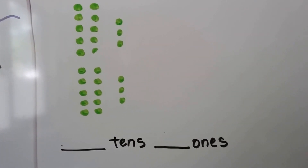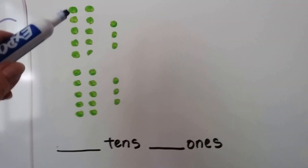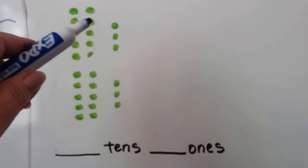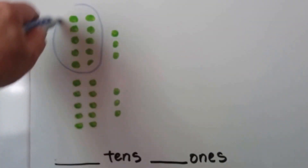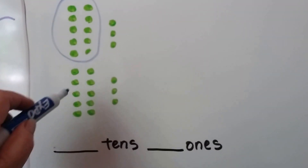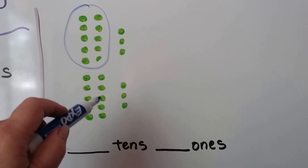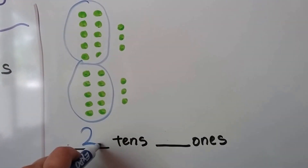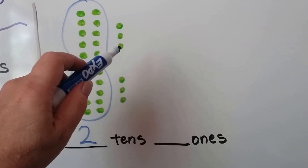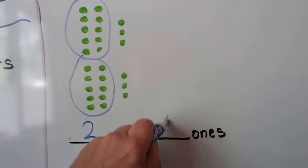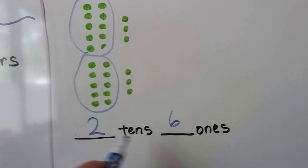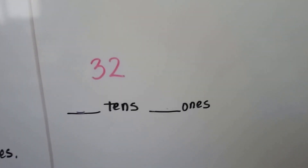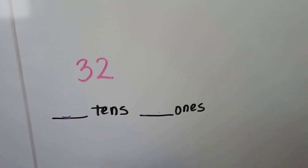So how many tens and ones are here? Let's count them. We've got one, two, three, four, five, six, seven, eight, nine, ten — that's one ten. And one, two, three, four, five, six, seven, eight, nine, ten — that's another ten. So we have two tens, and we have one, two, three, four, five, six ones. We have 26 — two tens and six ones.